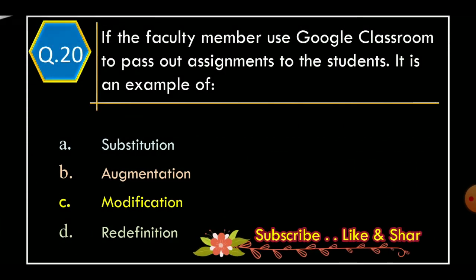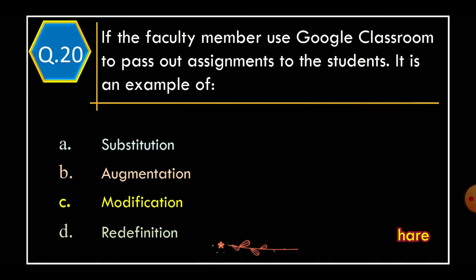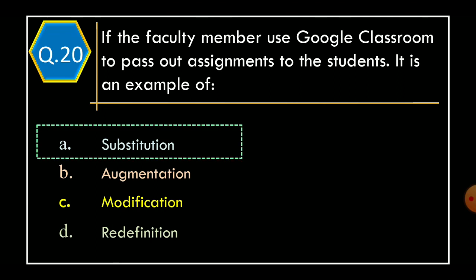Question 20: If the faculty member uses Google Classroom to pass out assignments to students, it is an example of — Option A: Substitution. Option B: Augmentation. Option C: Modification. Option D: Redefinition. And the correct option is Option A: Substitution.